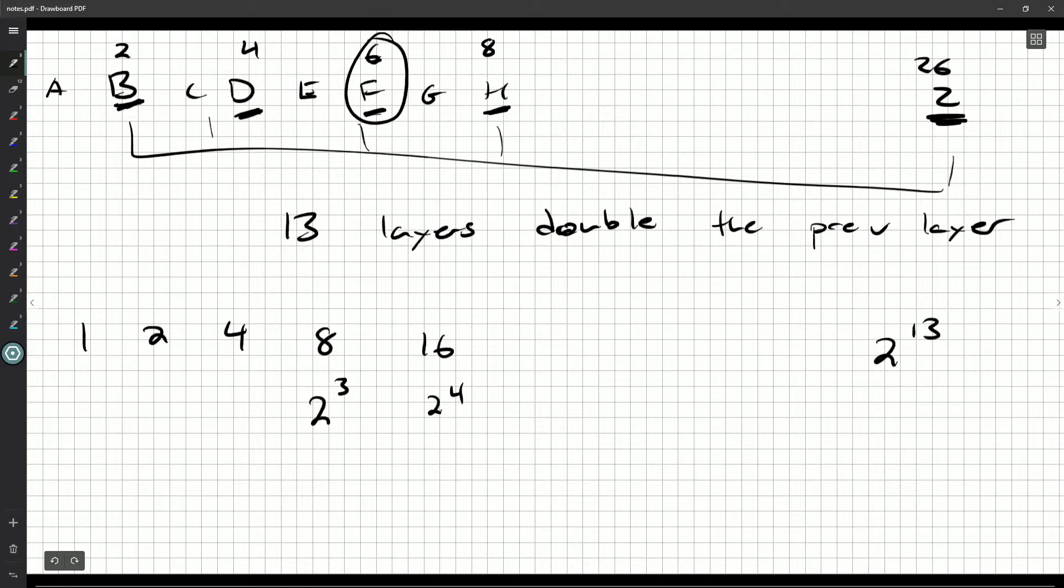Now, you might know your powers of two, especially if you're going to be doing a lot of computer science classes. You might know two to the thirteen is 8,192, but of course, if not, just grab your calculator. You're more than welcome to plug it in there.